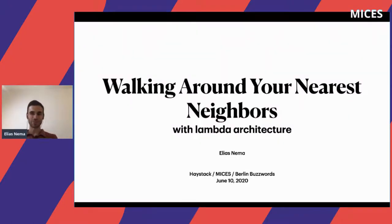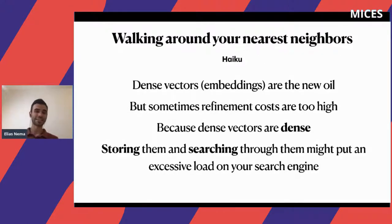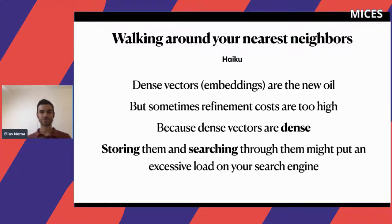I'm going to be talking about nearest neighbors and lambda architecture. But first I want to start with a haiku I composed yesterday. It starts like this: 'Dense vectors or embeddings are the new oil' — you can see how many people are talking about them. But sometimes refinement costs are too high because dense vectors are dense, and storing and searching through them might put an excessive load on your search engine.